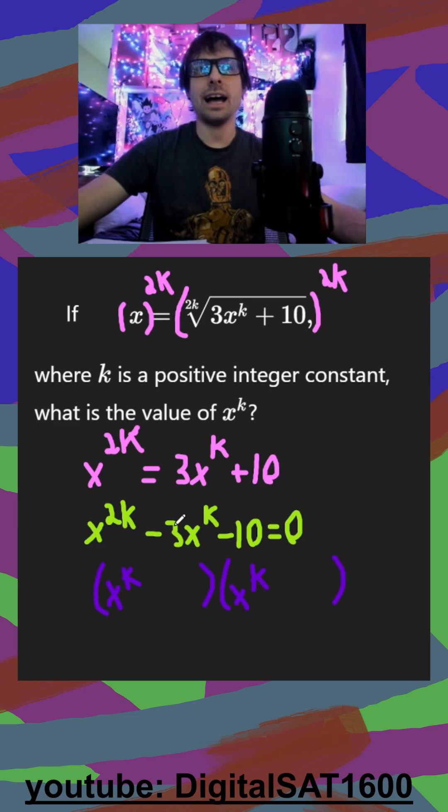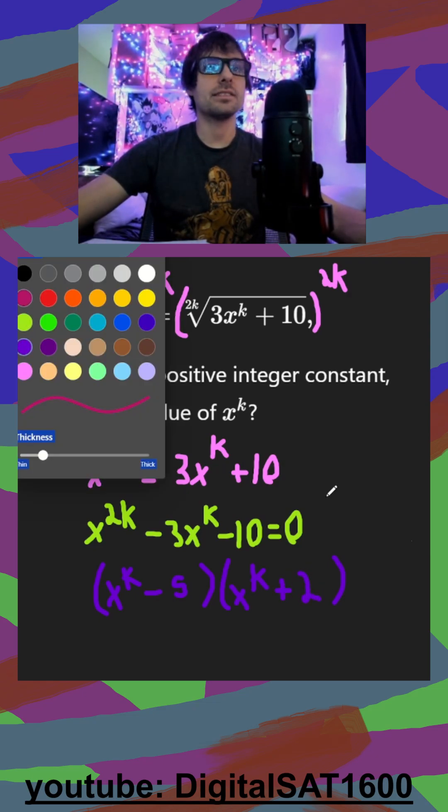And it's just going to be what adds to negative 3 that multiplies to negative 10. And that's just going to be minus 5 and plus 2, and this is still equal to zero.